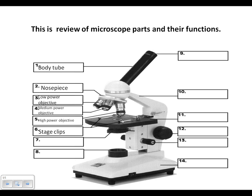Part number six, these are the stage clips, and they hold your specimen in place or your slide. Part number seven is the diaphragm. The diaphragm controls the amount of light that enters the stage opening.